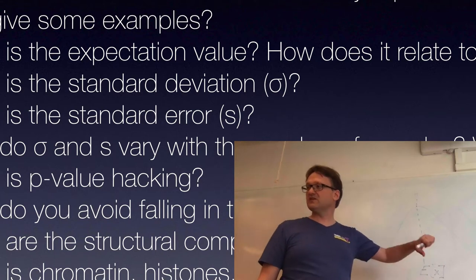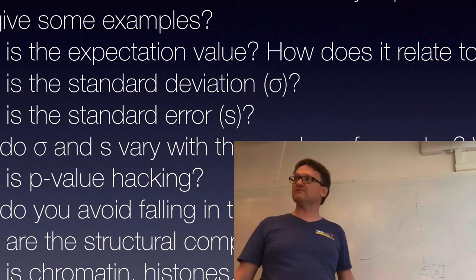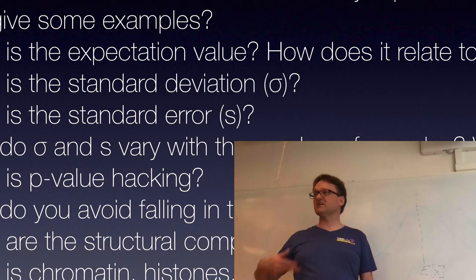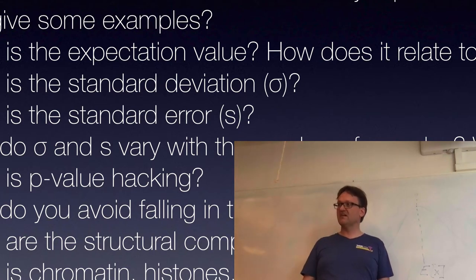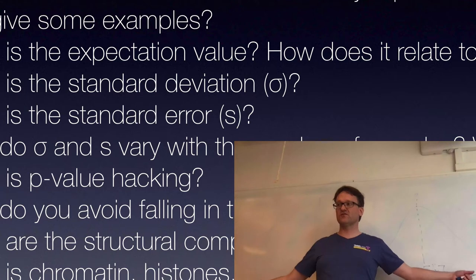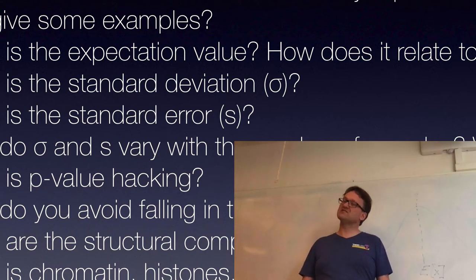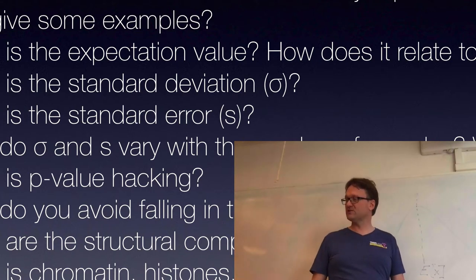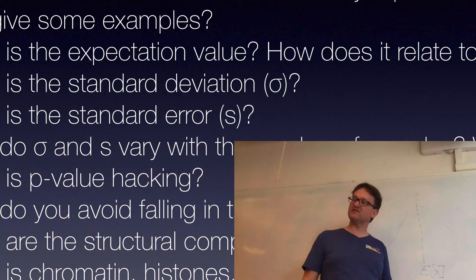The expectation value is the hidden thing we're after but that we can't measure. The average is what you actually get from your experiments, which is why you try to get more data. An average from one sample is unlikely to be a good estimate of the expectation value, while the average over 500 samples will hopefully be a much better estimate.